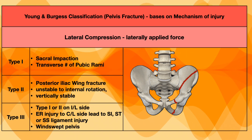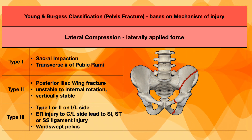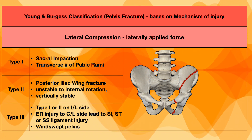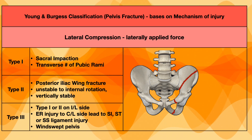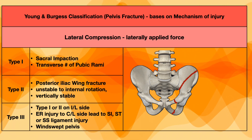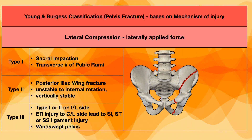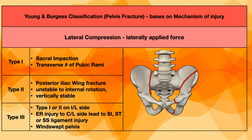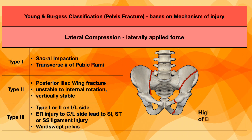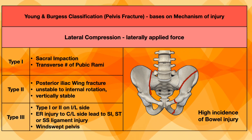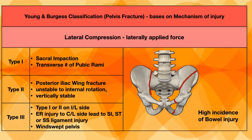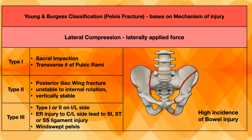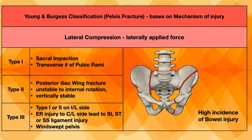In type 3 fracture, there will be type 1 or type 2 injury on the same side, but due to external rotation impact on the other side, there will be injury to the ligaments — sacroiliac, sacrotuberous, or sacrospinous ligament injury may be present. This type of pelvis is called a wind-swept pelvis. There is a high incidence of injury to the bowel in this type of fracture, and we expect a large amount of blood loss, so we should evaluate the patient thoroughly and plan appropriately.